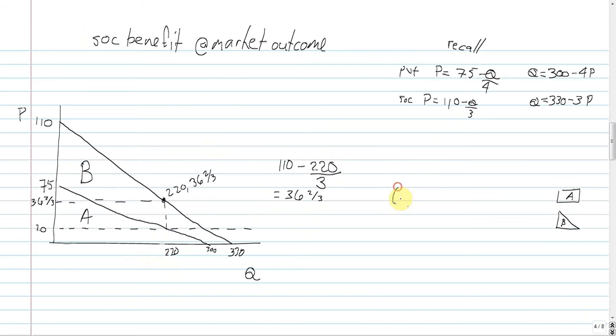So then it becomes a simple matter of calculating the area of rectangle A and triangle B, and then adding the two together.